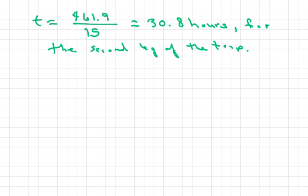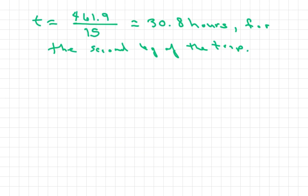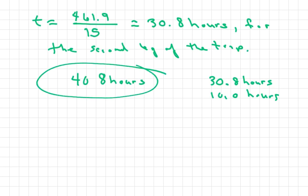Now the total time of the trip, therefore, would be 40.8 hours. Because remember, we got the first part of it earlier. So basically, the total trip will be 40.8 hours, because you're adding the 10 hours that he already took. So 30.8 hours plus 10 hours. This is the total time of the trip. Thank you and have a nice day.